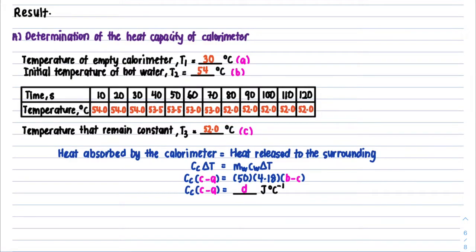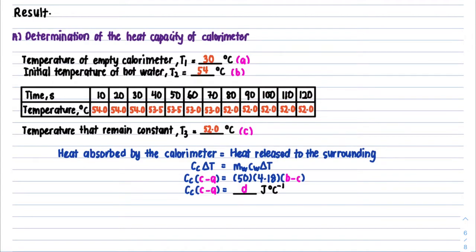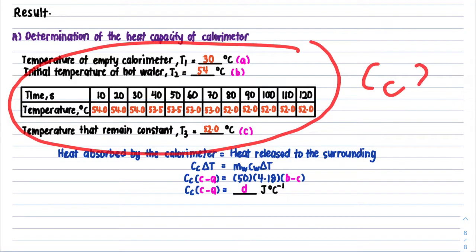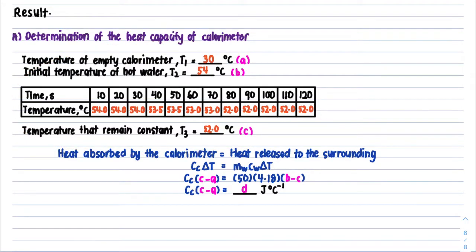Here we have the temperature of the empty calorimeter, the temperature of the hot water, and then the temperature recorded every 10 seconds for 120 seconds, and the temperature that remains constant. To find T3 — the temperature that remains constant — look for whichever temperature stays the longest. In this case, 52 degrees Celsius stays for 50 seconds, so that is T3.